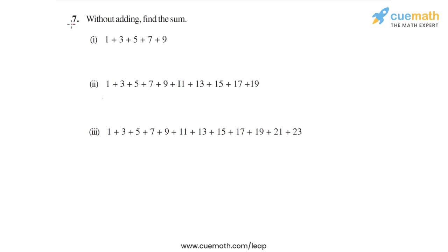In question 7, the problem statement says, without adding, find these sums. In the first part, we have the sum 1 plus 3 plus 5 plus 7 plus 9. In the second part, we have the sum from 1 up to 19 and all the odd integers in between. And in part 3, we have the sum from 1 up to 23 and all the odd integers in between.